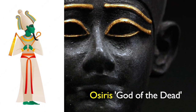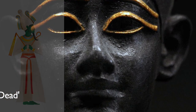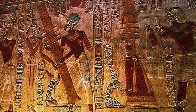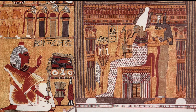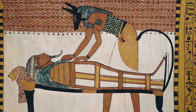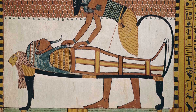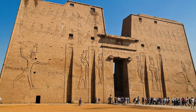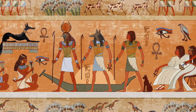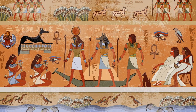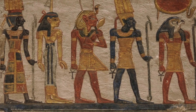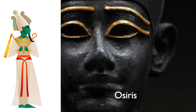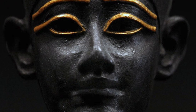Another important religious cult of the Middle Kingdom was the cult of Osiris, god of the dead. This cult was centred in the city of Abydos and inspired the creation of intricate funerary objects and tomb paintings. The belief in the afterlife was central to Egyptian religious belief, and the art and literature of the Middle Kingdom reflect this preoccupation with death and the journey to the afterlife.